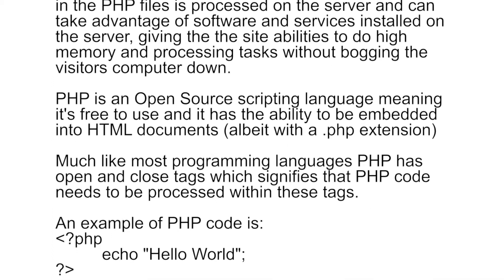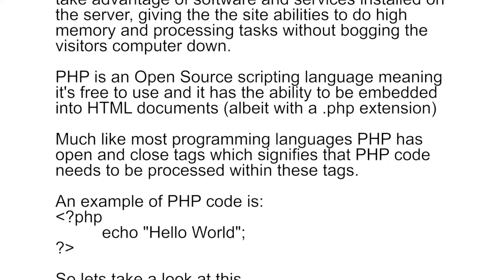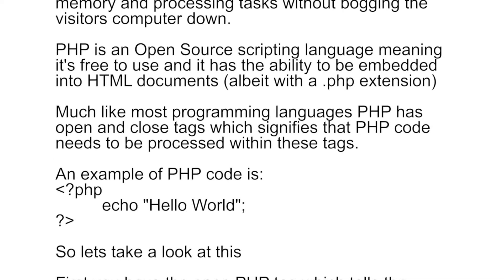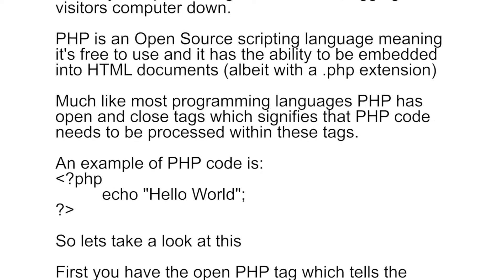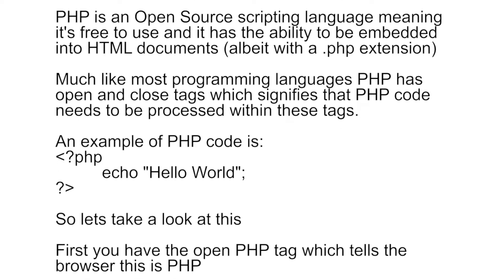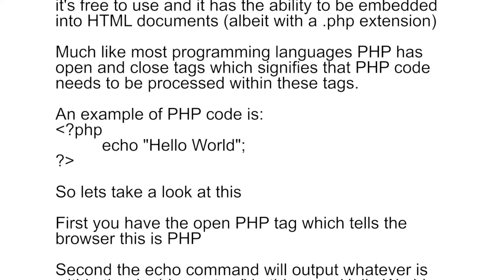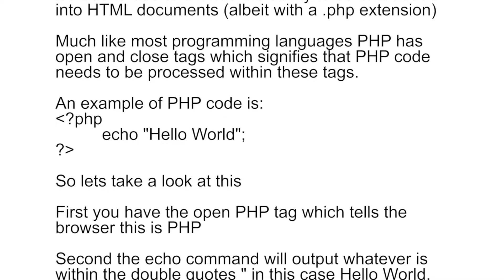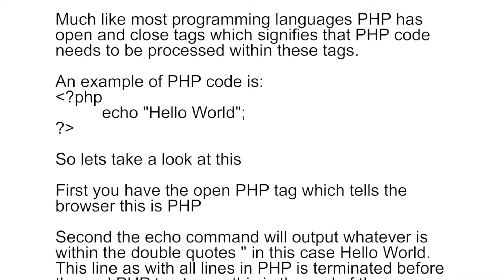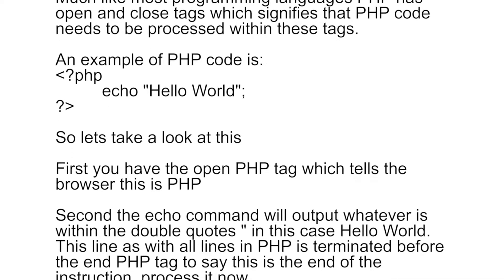So let's look at the example here. We have a triangle bracket, a question mark, and then PHP. On a new line we have the word echo, within double quote marks we have 'hello world', then a semicolon. On the next line down we have a question mark and a close triangle bracket.